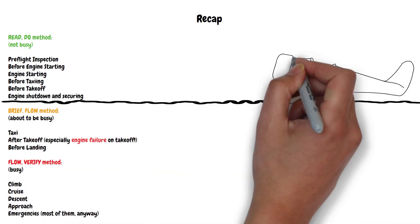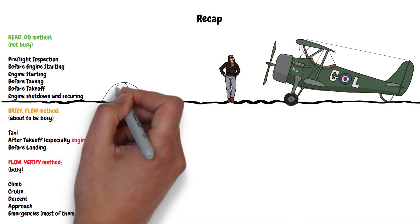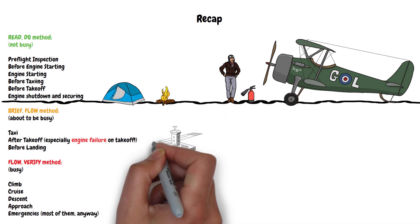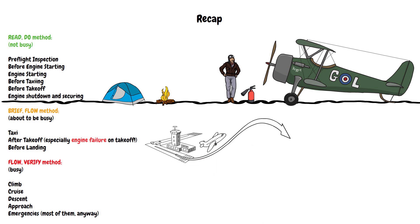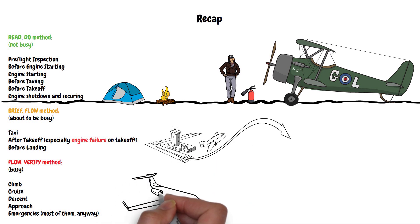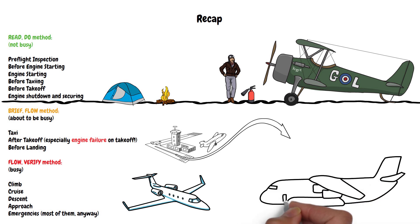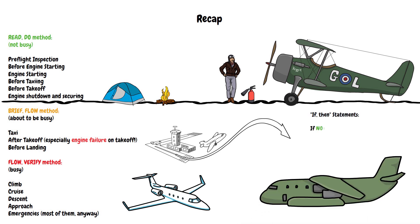Let's recap. For the pre-flight inspection, before engine starting, engine starting, before taxiing, before takeoff, and engine shutdown and securing phases: read and do. For the taxi, after takeoff, and before landing phases: brief and flow. During climbout, cruise, descent, approach, and emergencies: flow and verify. If you're not busy, read the checklist and do the items. If you're about to be busy, brief the checklist items beforehand, then do the flow when it's time. If you're busy, do your flow first from memory, then verify with a checklist when time permits.